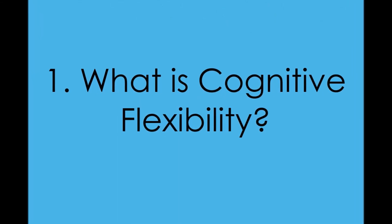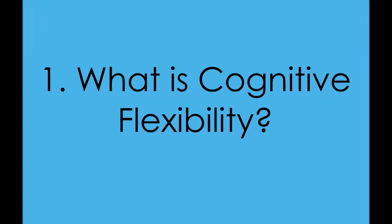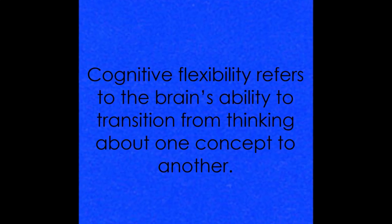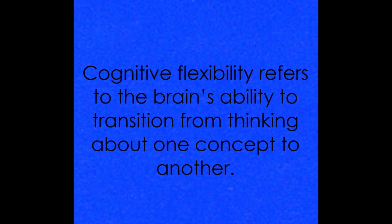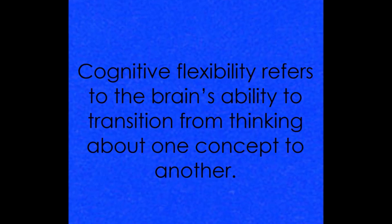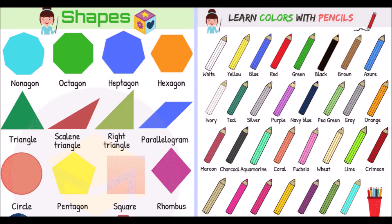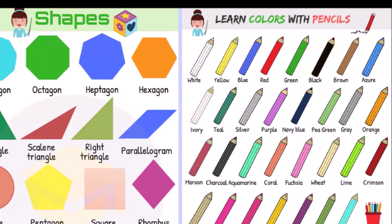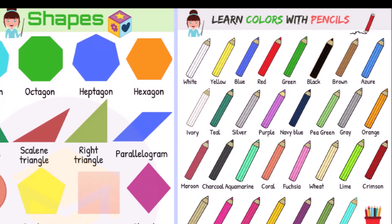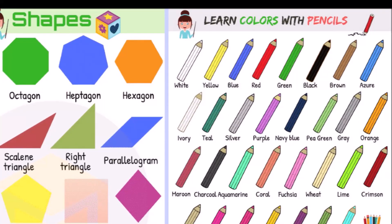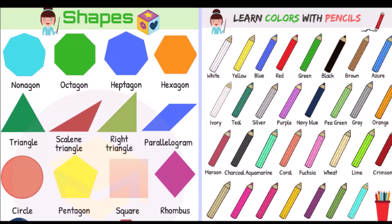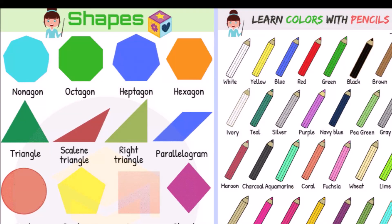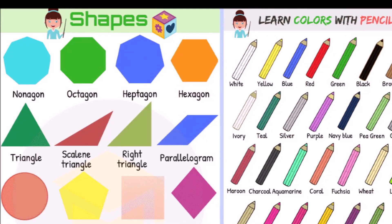What is cognitive flexibility? Cognitive flexibility refers to the brain's ability to transition from thinking about one concept to another. The quicker you're able to switch your thinking from one dimension — for instance, the color of an object — to another, let's say the shape of an object, the greater your level of cognitive flexibility.